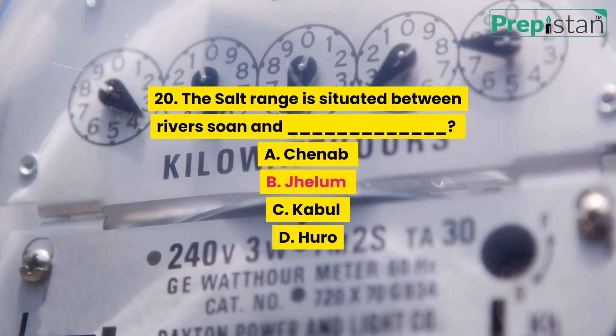Question 20: The salt range is situated between rivers Sone and blank. A. Chenab, B. Jhelum, C. Kabul, D. Haro.